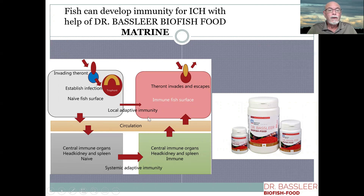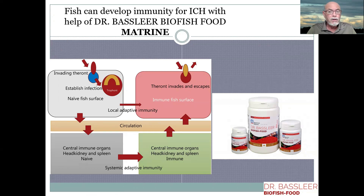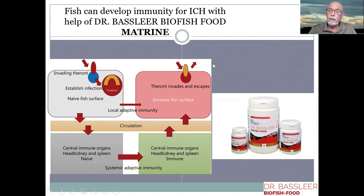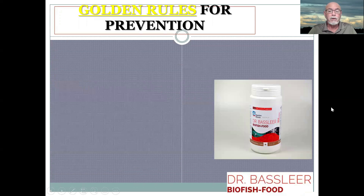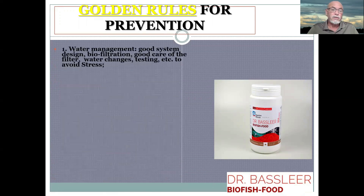We can help the fish surface — a local immune system — to fight off parasites and adapt. The central immune organs like the head kidney and spleen can develop systemic adaptive immunity. Fish in your aquarium that have had white spots can, weeks or months later, develop resistance and immunity against white spot disease. You have to keep them in good conditions, because in bad conditions the immune system will fail and they can get white spot again. Treatments with medications are also important.